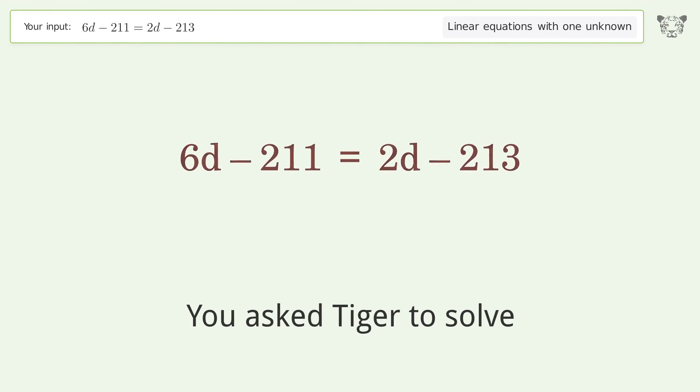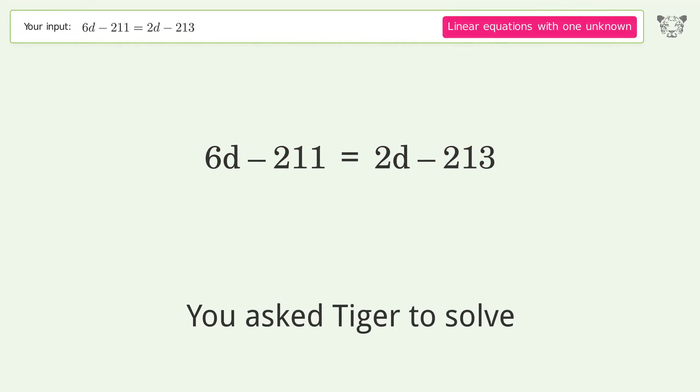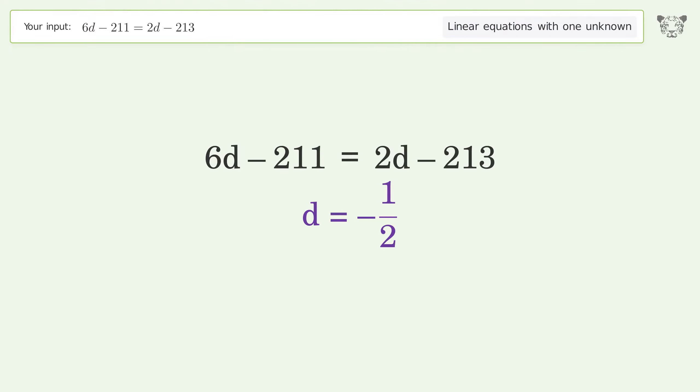You Asked Tiger to Solve. This deals with linear equations with one unknown. The final result is d equals negative one over two.